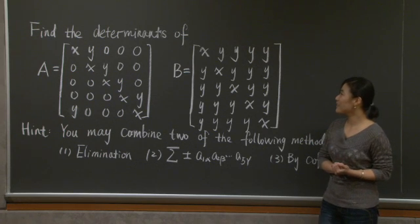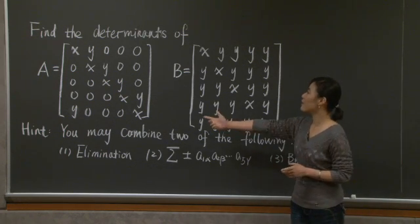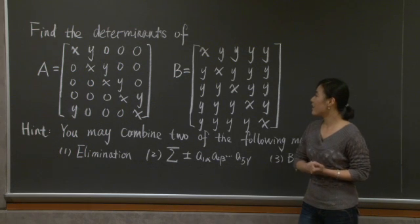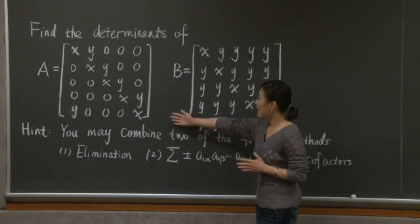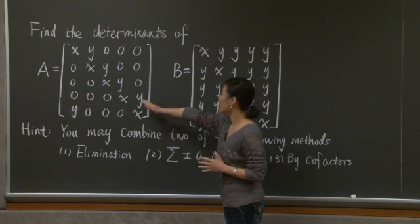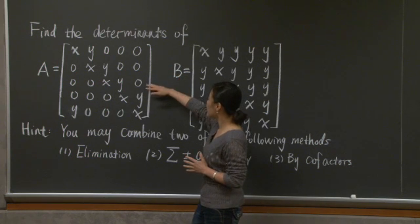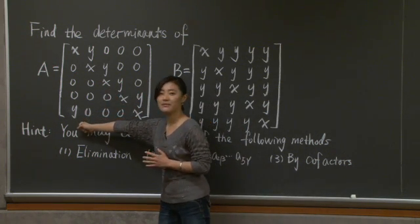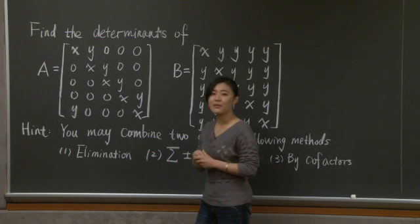So we want to find out the determinants of these two five-by-five matrices. And as you can see, matrix A has x along this diagonal, and in the first four rows, y to the right of x, except for the last row, and zero entries everywhere else.